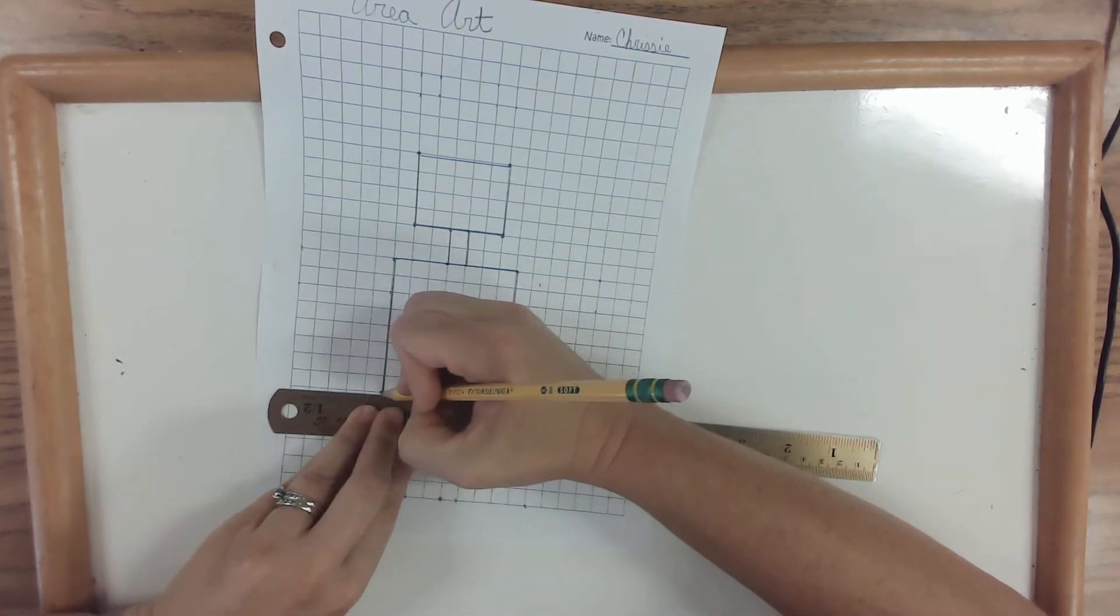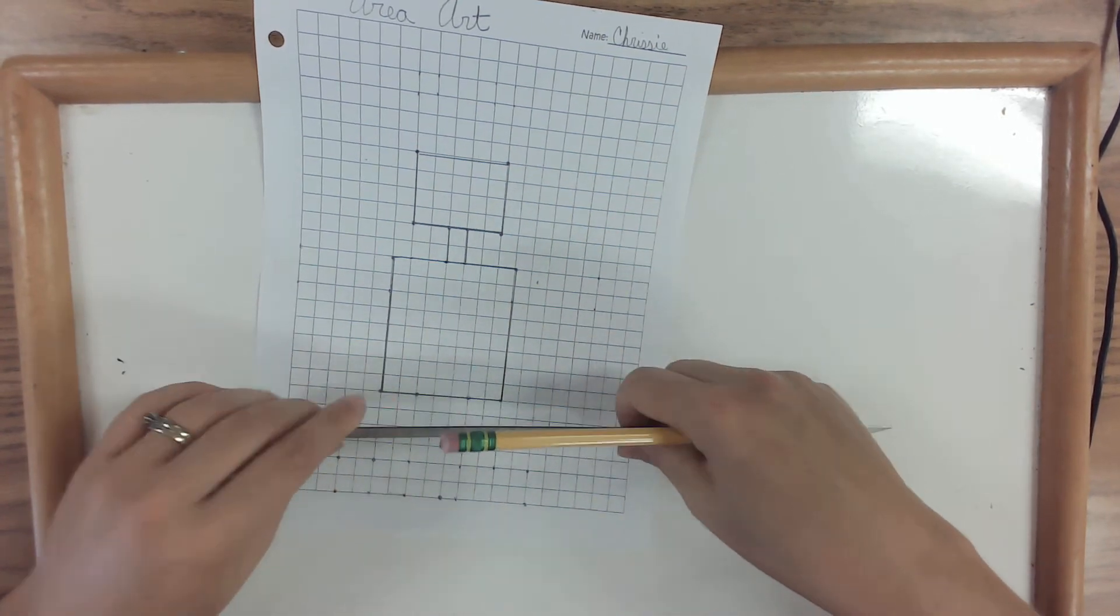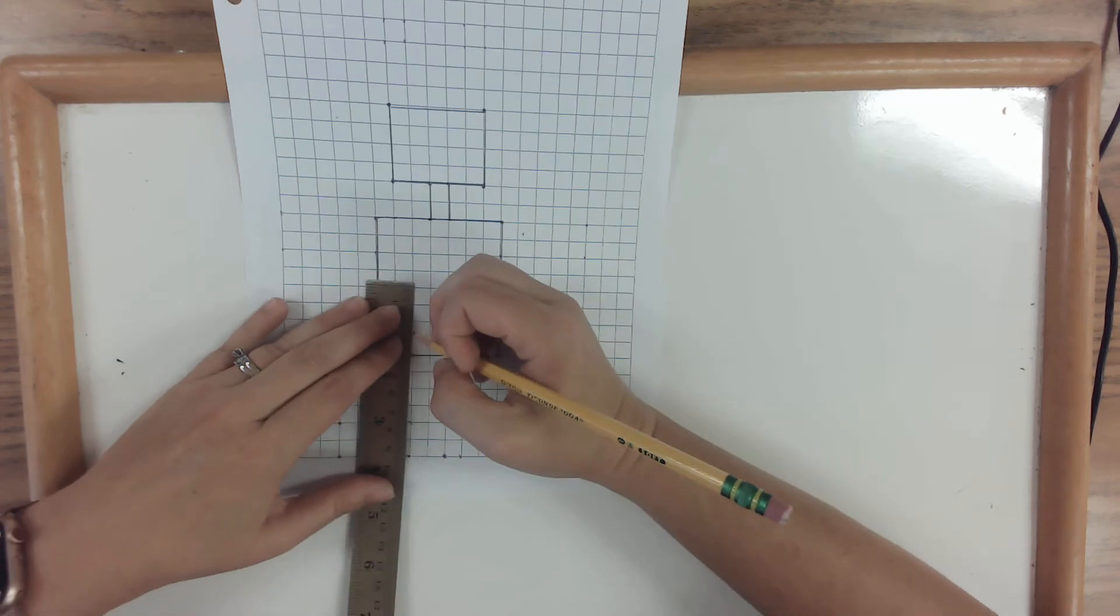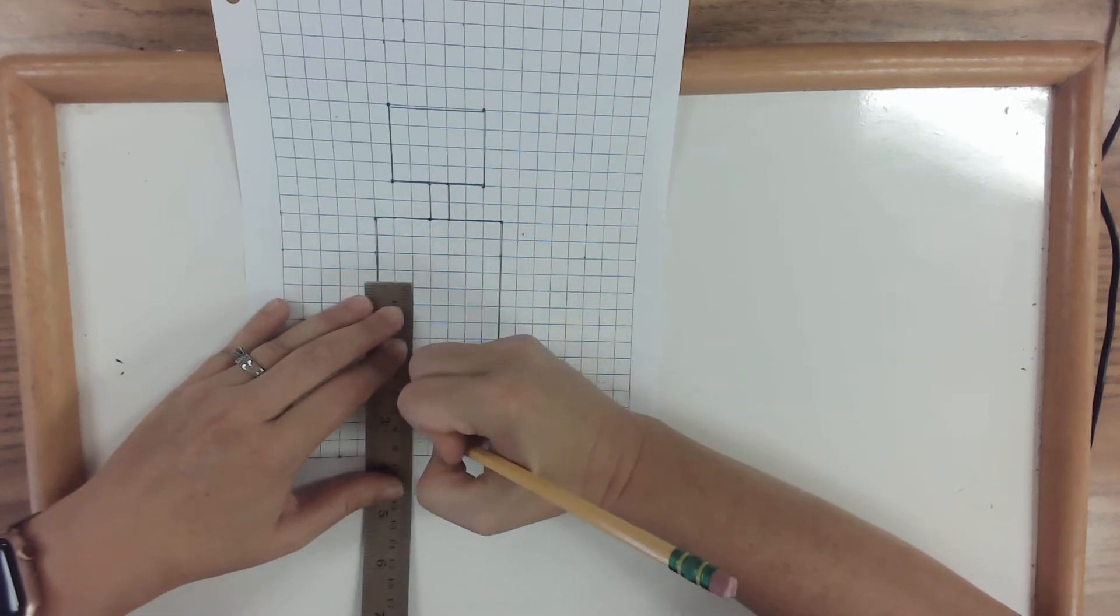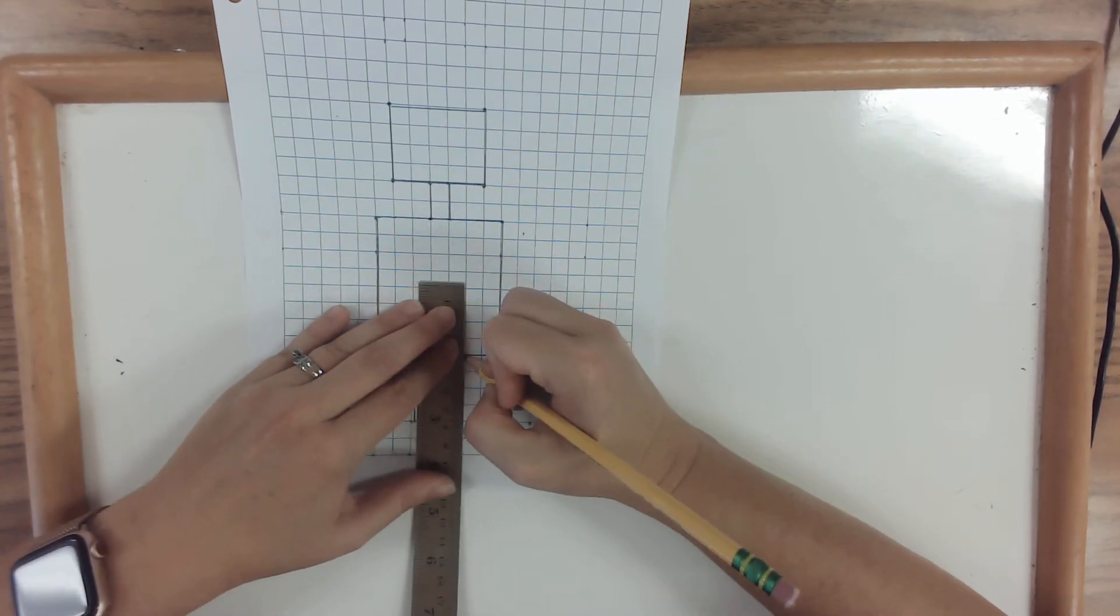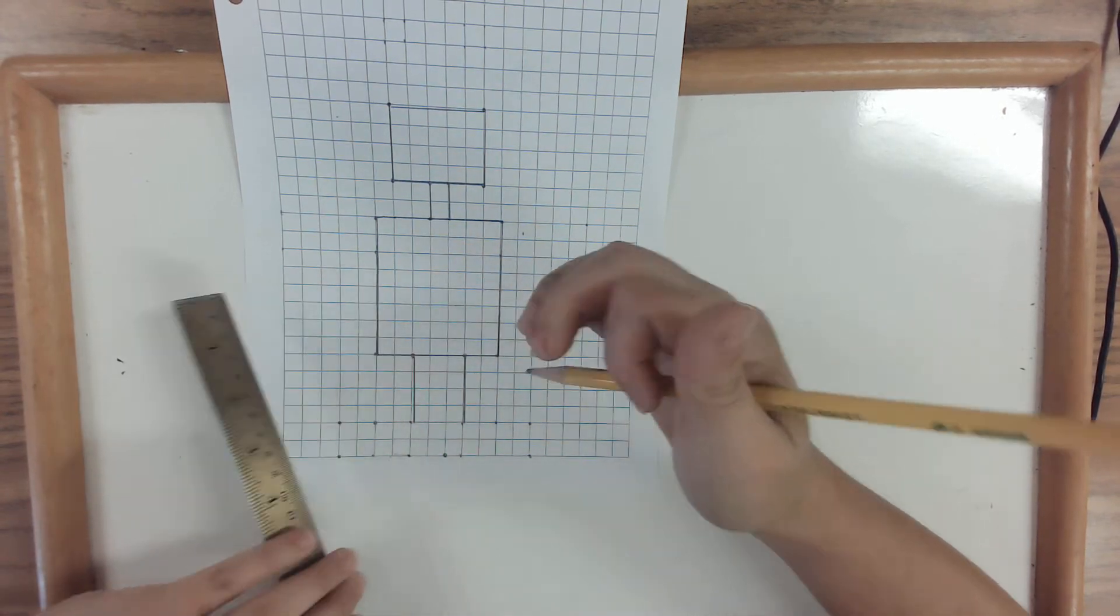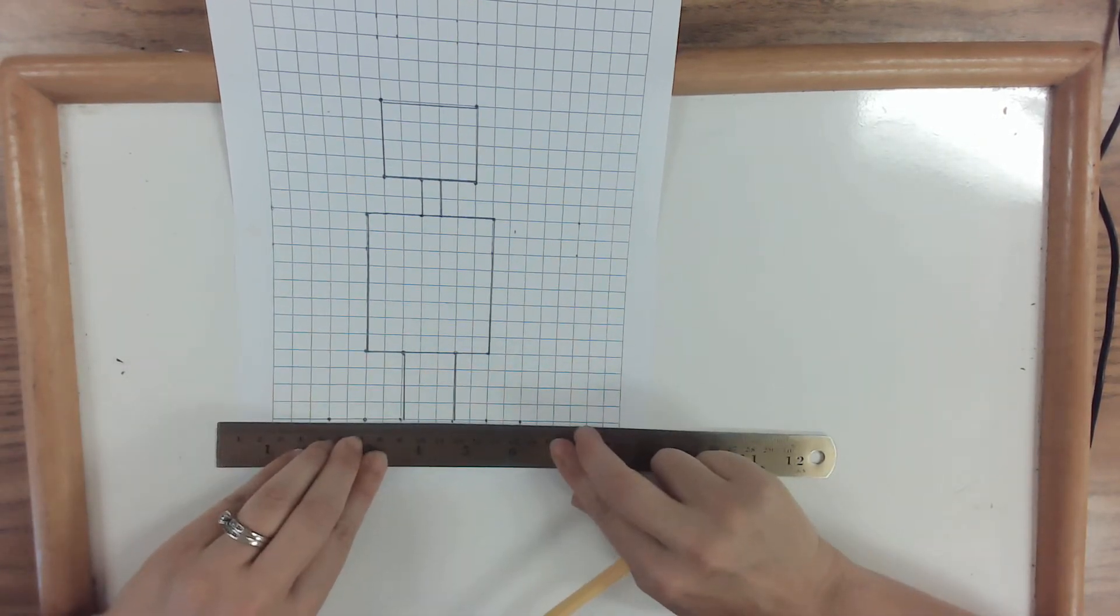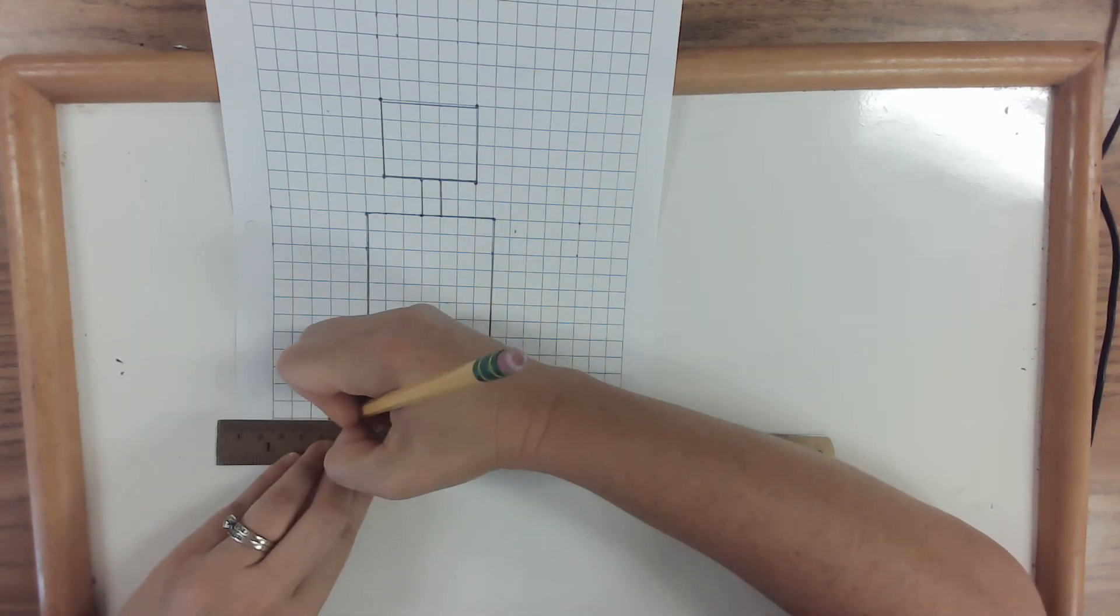So, I'll just keep drawing these. I would wait to color it in until the very end. So, if you've made any mistakes or you want to change anything, you still can. I wonder if you can tell what I'm trying to draw yet.